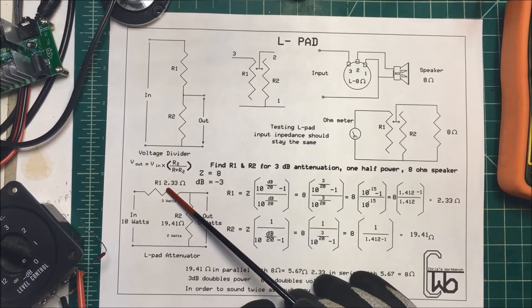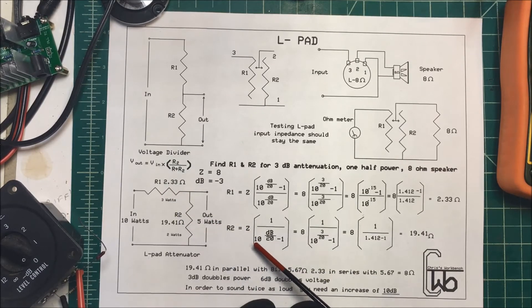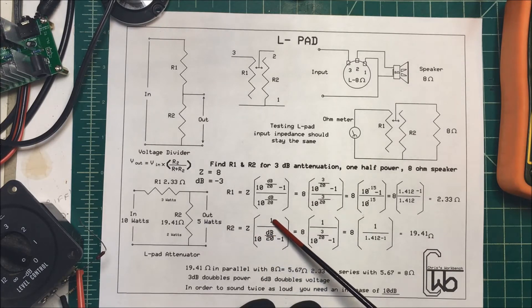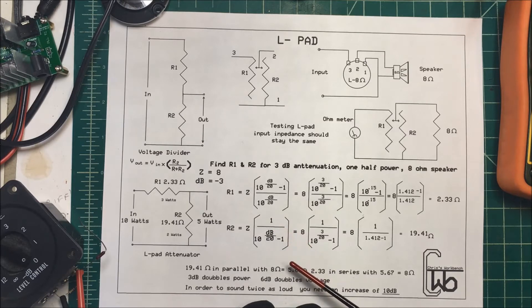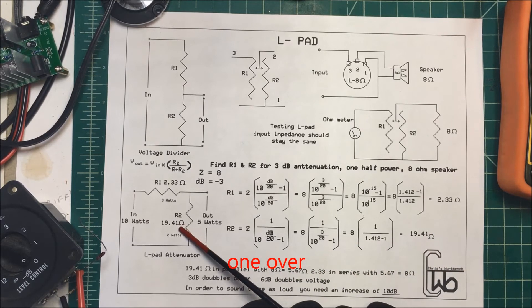To find the resistance of R2, you take 10 to the power of dB over 20 minus 1 over 1. So 8 divided by... you just do the math here. 1.412 minus 1 over 1 times 8, that equals 19.41 ohms if I did the math right there.